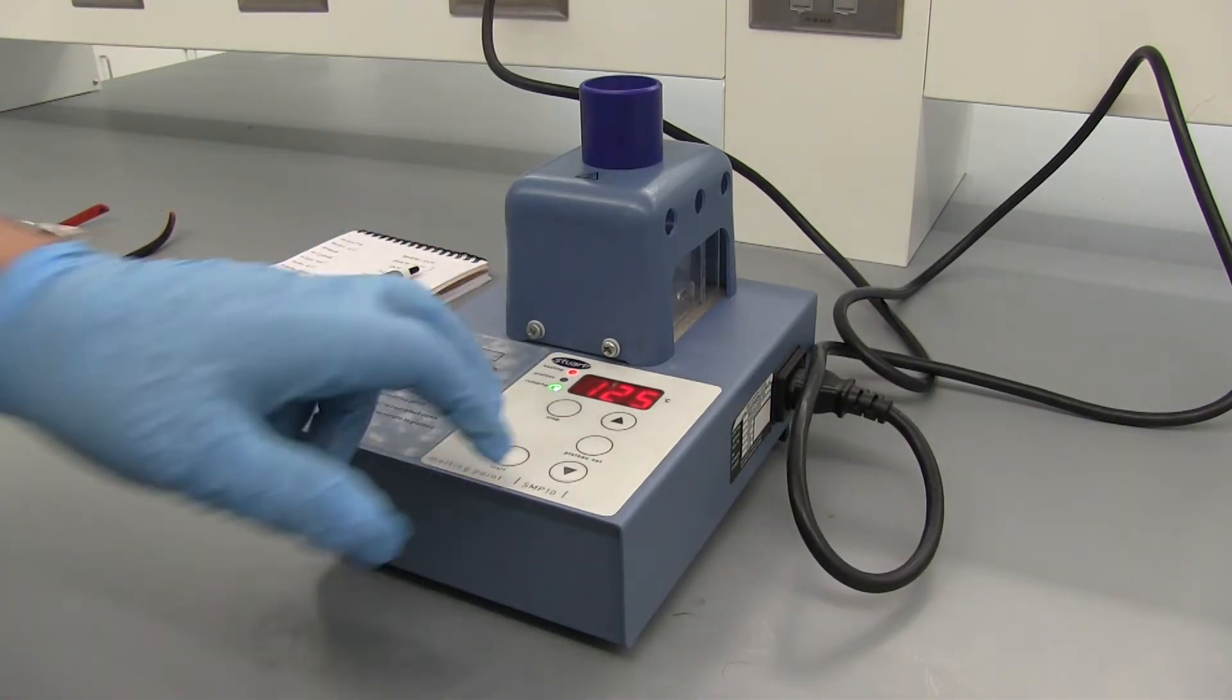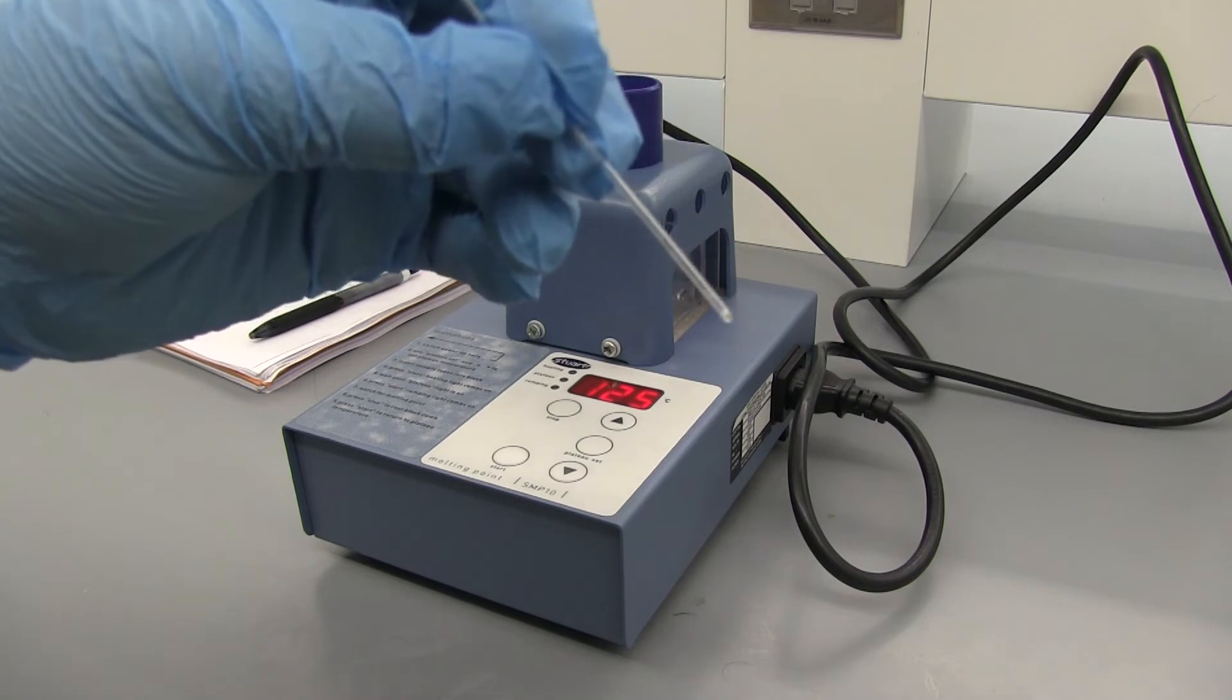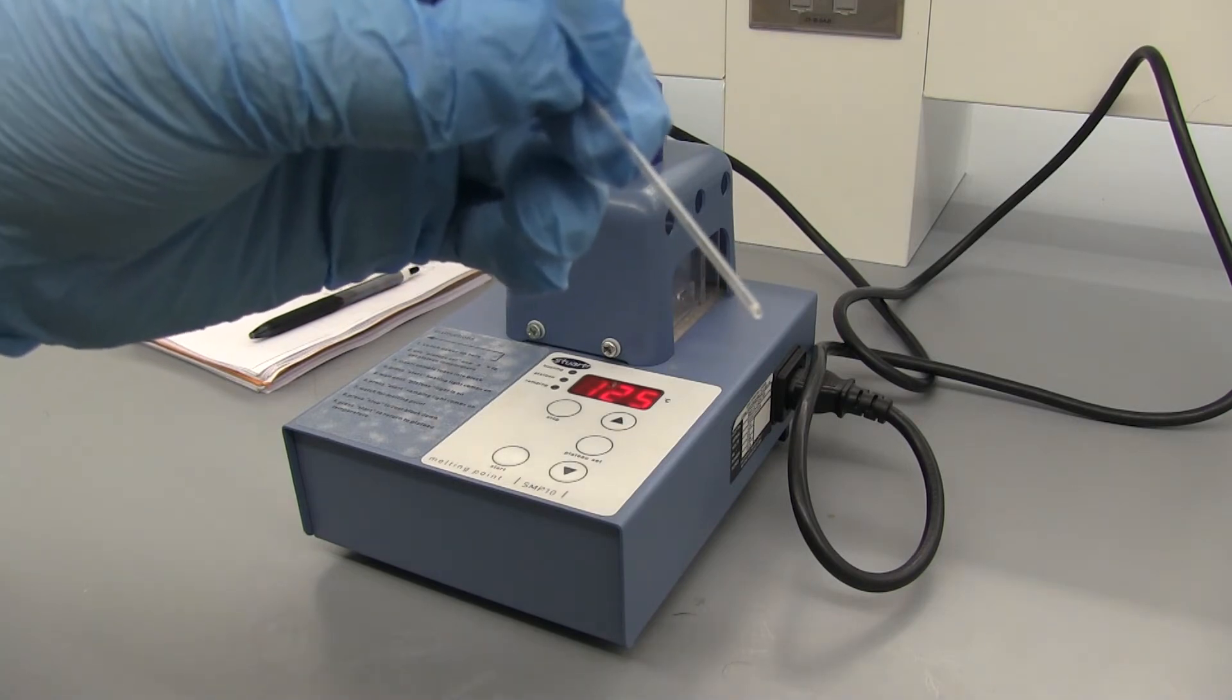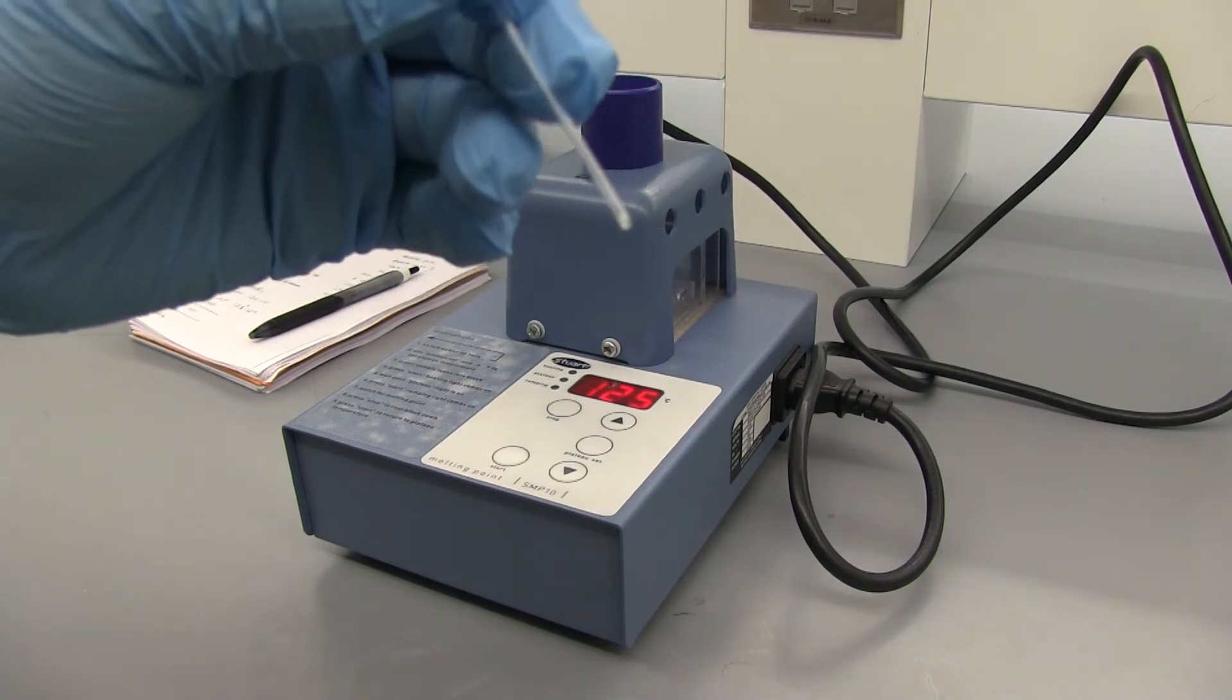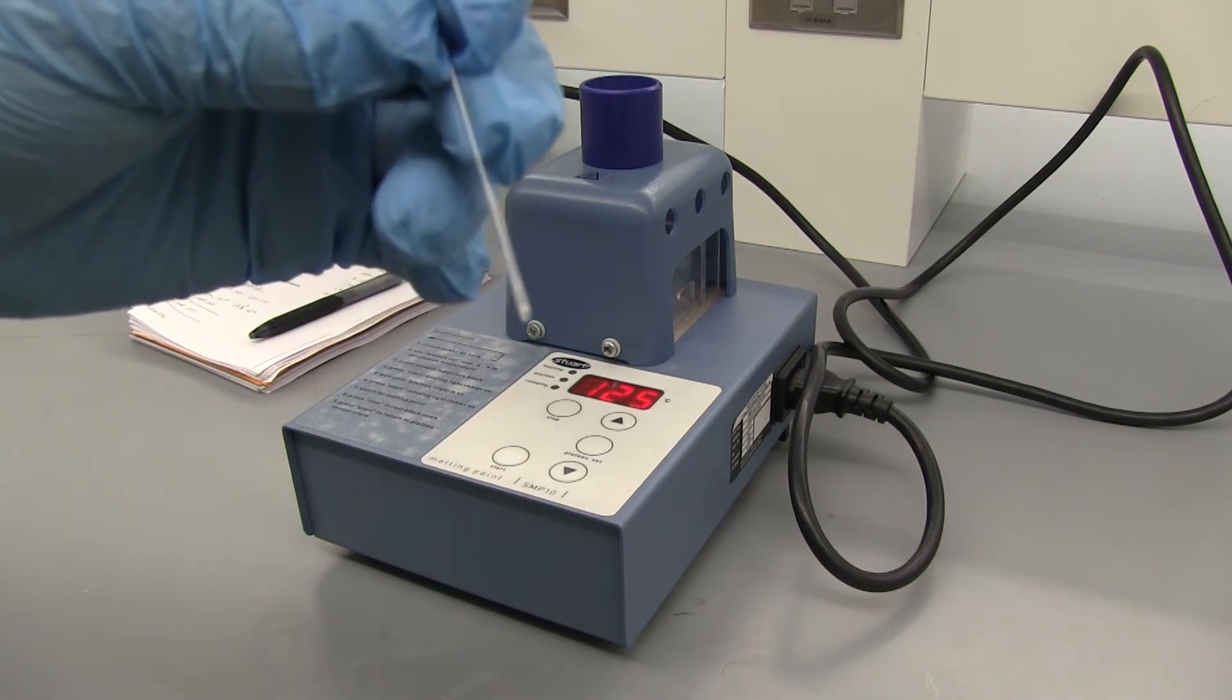Alright so now that we've stopped we can press stop button, let the heating block cool back down. Our slow melting point was 122 degrees Celsius to 124 degrees Celsius. So it seems likely that our identity is benzoic acid.